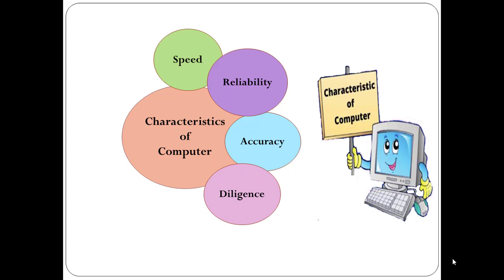The next one is diligence. A computer can perform millions of tasks or calculations with the same consistency and accuracy. It doesn't feel any fatigue or lack of concentration. Its memory also makes it superior to that of human beings.